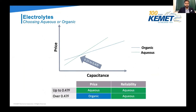We have two different types of supercapacitors: the aqueous type and the organic type. Other than electrical specifications, there are two key aspects to consider when choosing a supercapacitor: price and reliability, or lifetime. Up to 0.47 Farad, the aqueous style supercapacitor offers an advantage in price and reliability. Anything over 0.47 Farad, the organic type supercapacitors have an advantage in price, but their construction doesn't offer as much reliability.